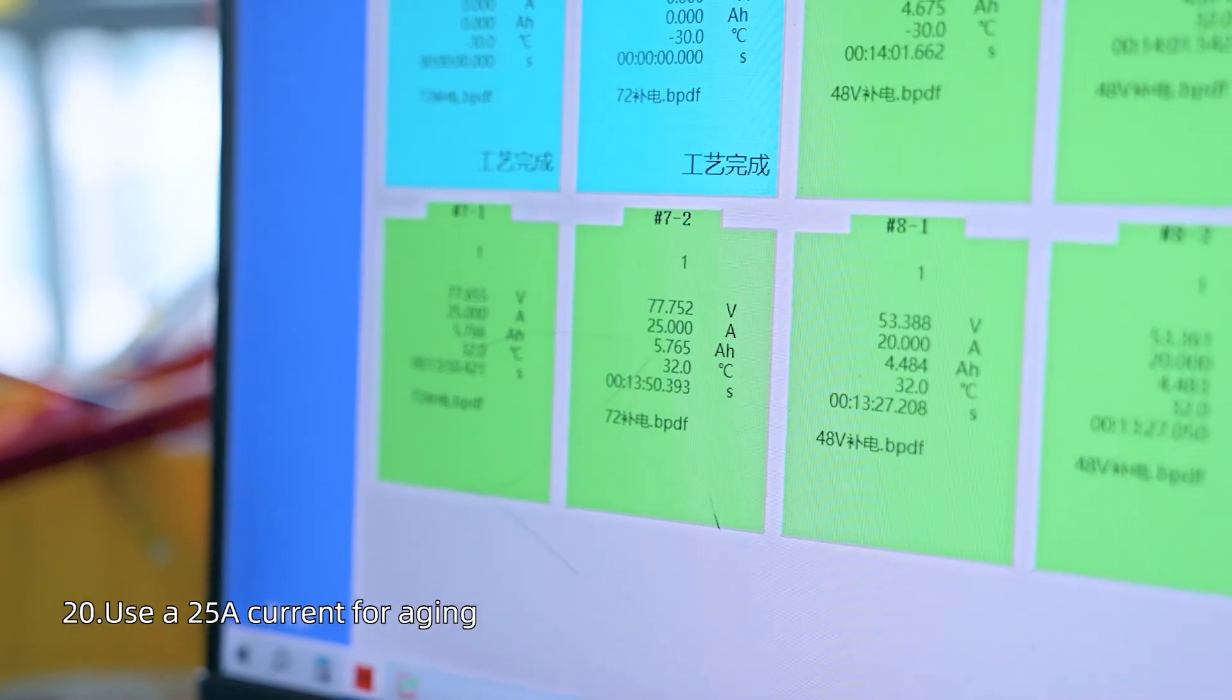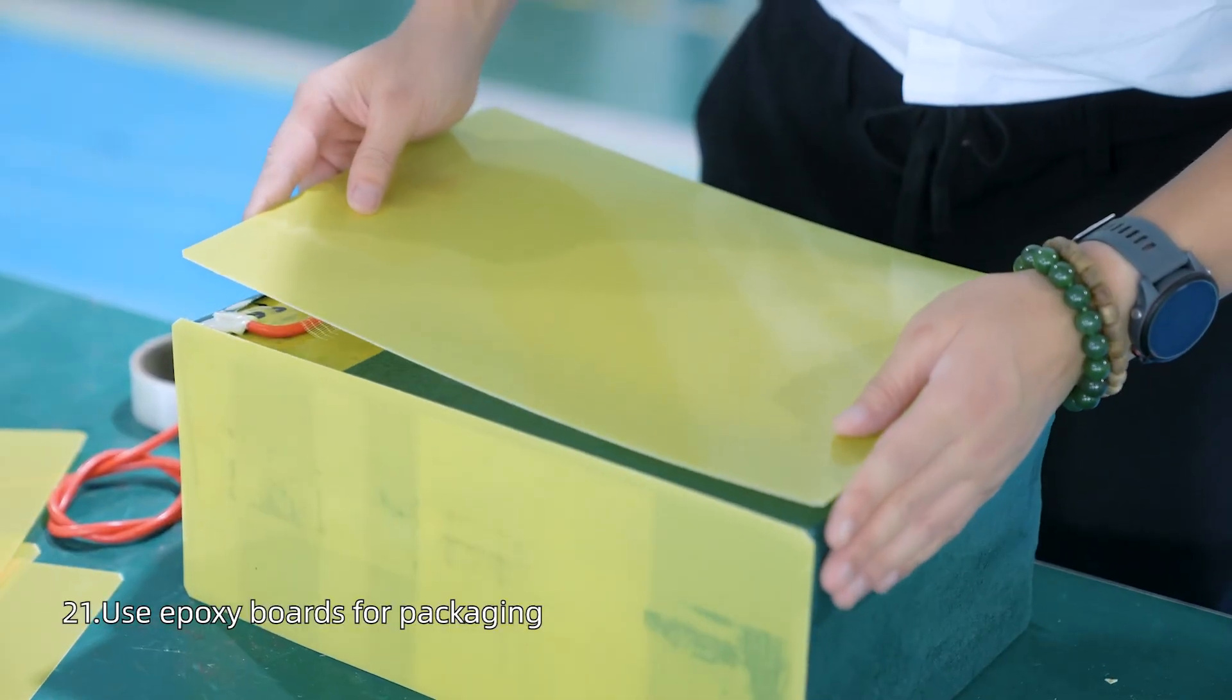Use 24 Ah current for aging. Use box and boards for packaging.